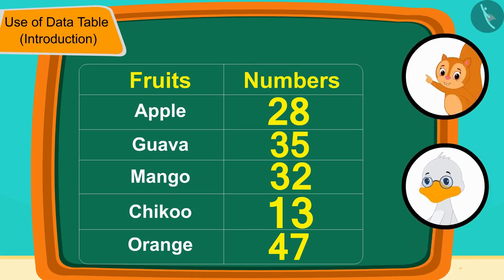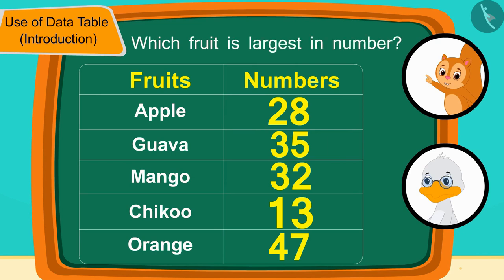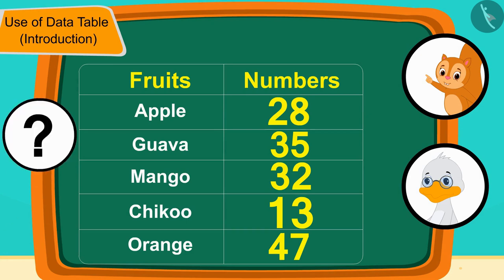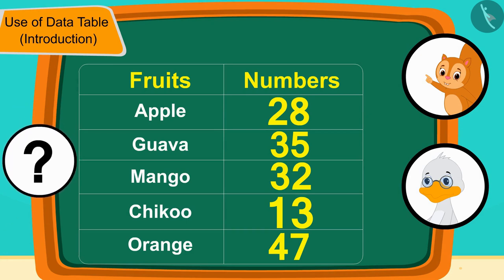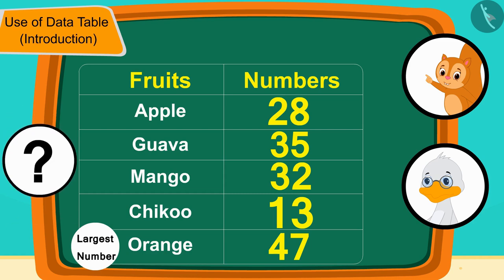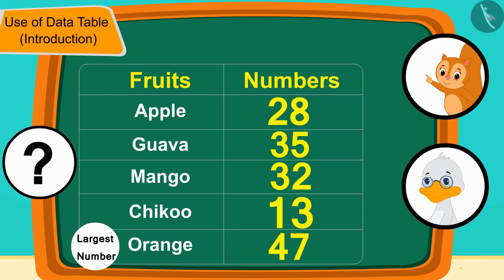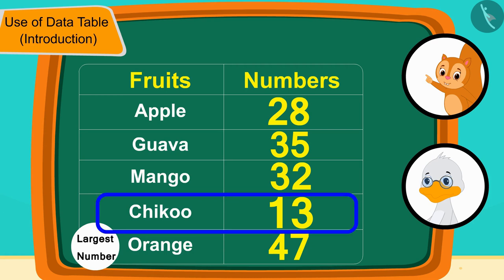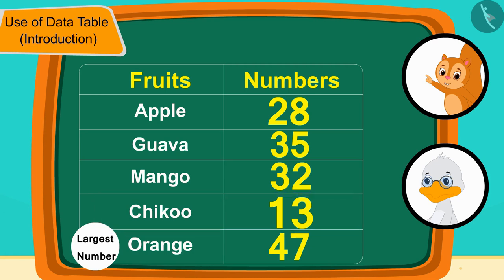Chanda asked uncle, 'Can you now tell which fruit is largest in number?' Children, by looking at this table, can you tell which fruit is the largest in number? Well done, children — your answer is absolutely correct! The total number of oranges, 47, is the largest. Now can you tell which fruit is the smallest in number? Correct — the number of chikkus, 13, is the smallest number.